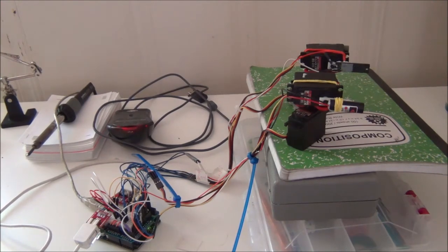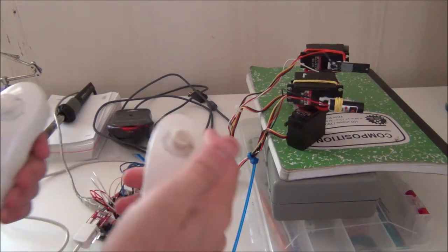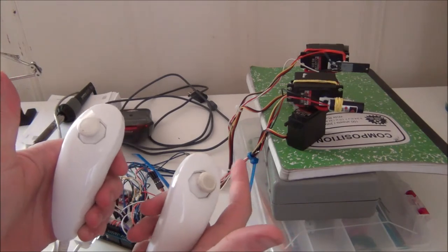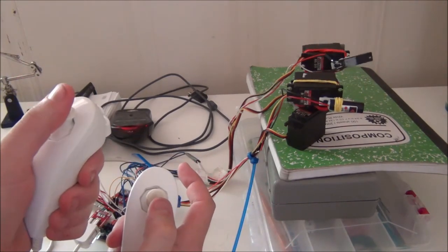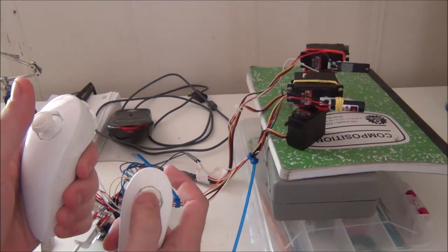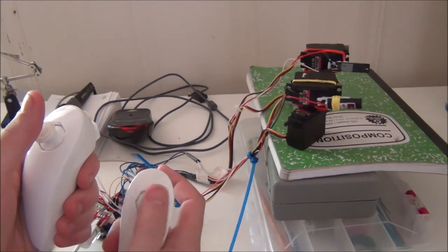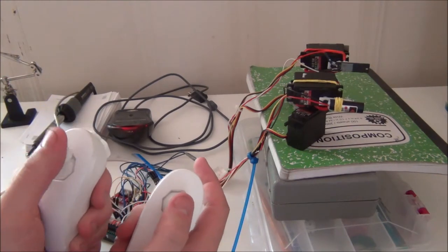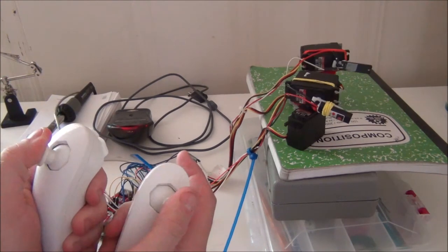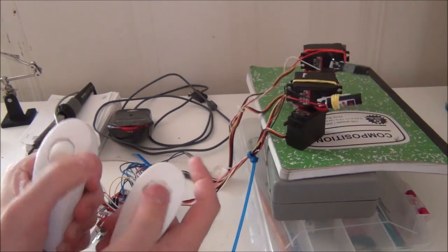You see I have two servos and I also have two Wii nunchucks. And the cool thing is, I can control one servo with one and the other with the other. So I essentially have two player control. Move that one up, that one down, that one up, that one right. Control them independently.